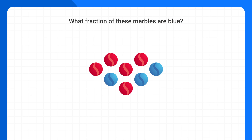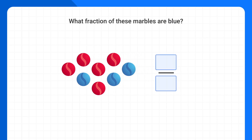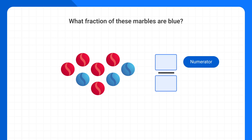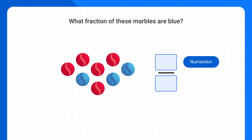Let's remember that there are two parts to a fraction. The numerator tells us how many pieces we have. Because we're looking for blue marbles, that means our numerator is the number of blue marbles. We can count that we have one, two, three blue marbles, so our numerator is three.